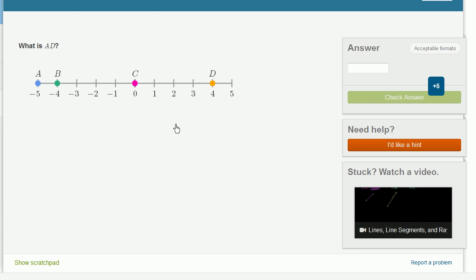And then let's do one more. What is AD? So A is at negative 5. D is all the way at 4. So we're going from negative 5 to 0, which is 5, and then we're going to go 4 more. 5 plus 4 is 9. Or you could say, hey look, we start at negative 5, we end up at 4. 4 minus negative 5 is the same thing as 4 plus 5, which is 9.